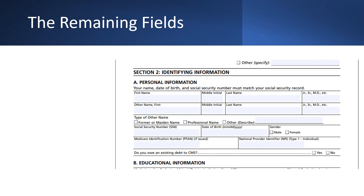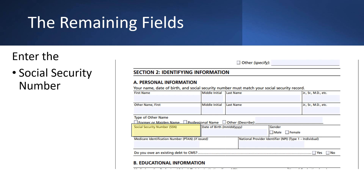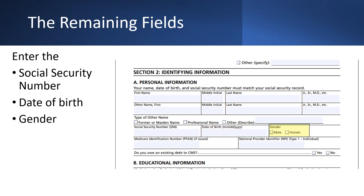Continue down Item A to complete the remaining fields. Enter the individual's Social Security number in the next row, left box. On the same row, center box, enter the individual's date of birth. Moving to the right of the date of birth on the same row, check a box for the individual's gender.